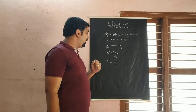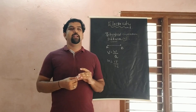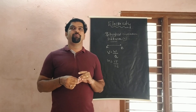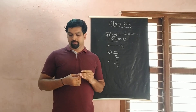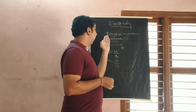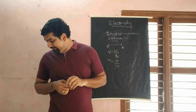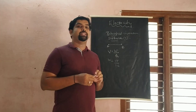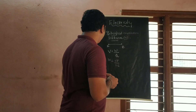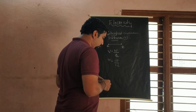The instrument used to measure potential difference is the voltmeter. There is a relationship between electric current and potential difference, expressed through a law called Ohm's law.